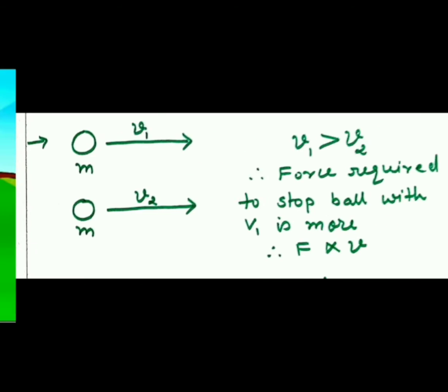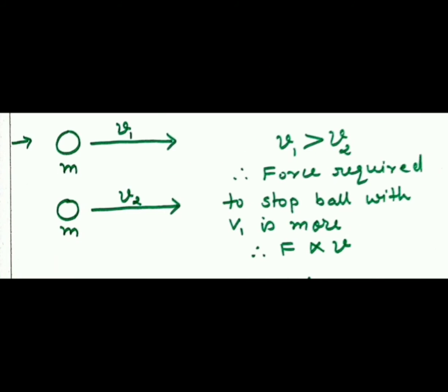Now we will take another example. In that example, suppose we have two bodies of same masses. Now both these bodies are moving with different velocities. V1 velocity is greater than V2. Now suppose if you want to stop these bodies, then where you will require a larger force? Masses toh dono body ke same hi thay. Hai na? Toh kisko rokne mein aapko zyadha taakat lagana padegi?